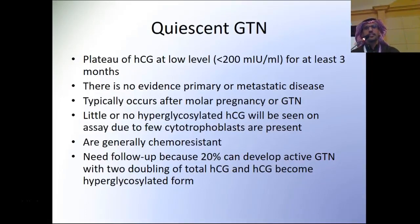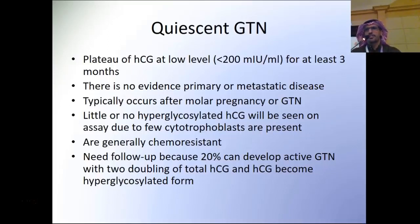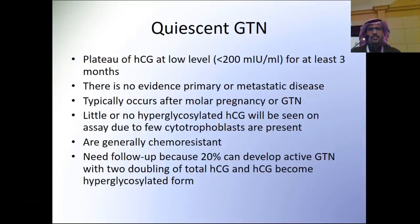Quiescent GTN is defined as a plateau of beta-HCG at a low level, usually below 200, for at least 3 months, with no evidence of primary or metastatic disease. It typically occurs after molar pregnancy or GTN. It is characterized by little or no hyperglycosylated beta-HCG due to few cytotrophoblastic cells, and is generally chemo-resistant. Only follow-up is needed; 20% can develop GTN, identifiable by doubling of beta-HCG and beta-HCG becoming hyperglycosylated in more than 20%.